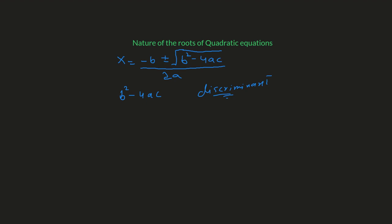Let's take one example. Say b-squared minus 4ac equals a positive real number — let's say it's 9. Note that b, a, and c are all constant numbers. If we plug 9 under the radical, we get negative b plus or minus 3, over 2a.